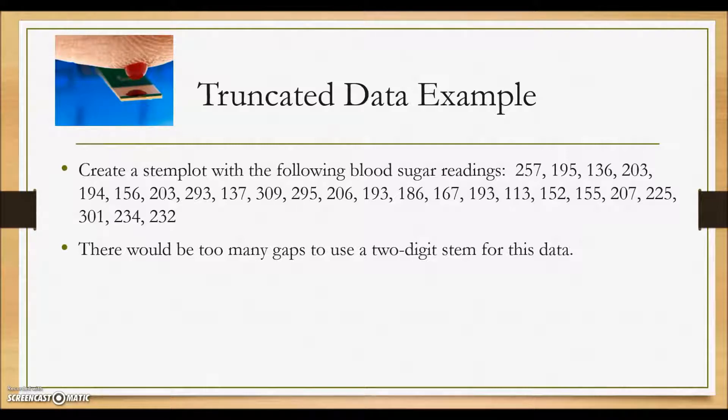So the alternative is to, again, use the truncated method. And with truncation, we will let the stems be created by using the hundred place values. So we'll have a stem of 2, 1, and our 3 for the two-hundreds, one-hundreds, and three-hundreds.